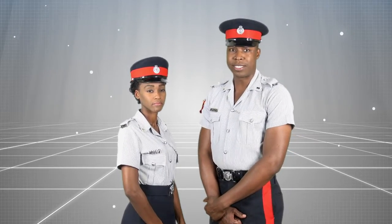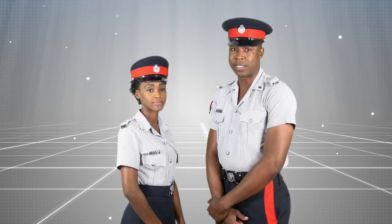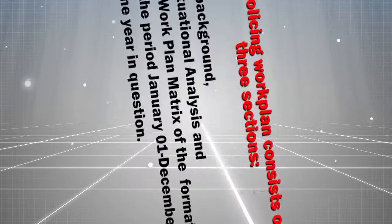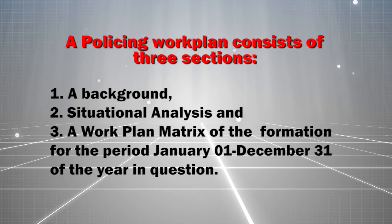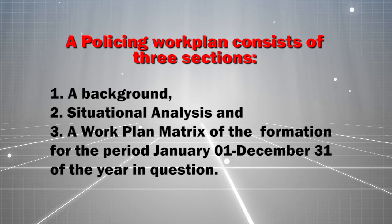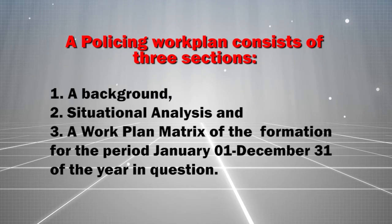In this tutorial, we will discuss the elements of the Policing Work Plan. A Policing Work Plan consists of three sections: 1. A Background, 2. A Situational Analysis, and 3. A Work Plan Matrix of the Formation for the period January 1 to December 31st of the year in question.